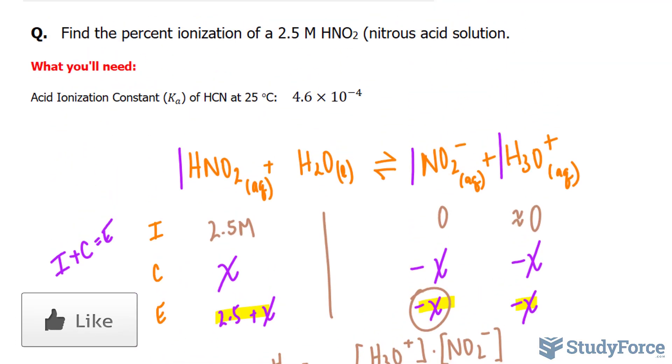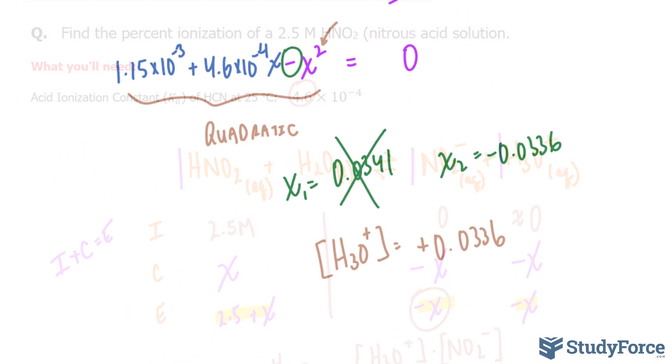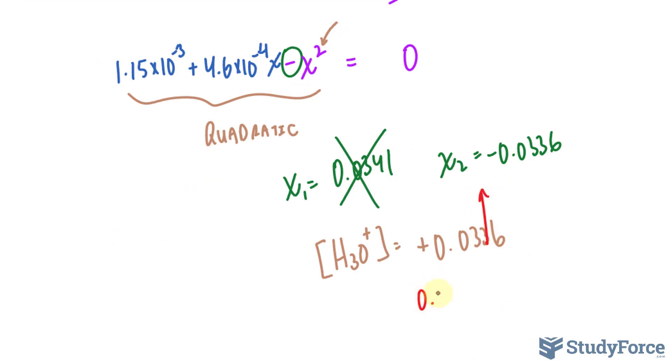Now, because our K sub A had two significant figures, our answer should also have two significant figures. So this 3 becomes a 4. We should have 0.034 molar.